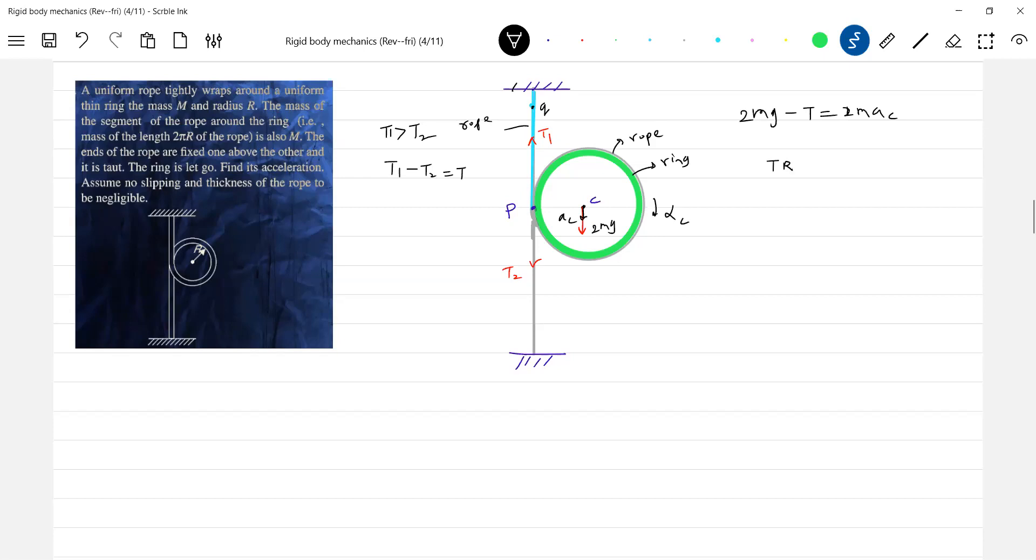Then T into R should be equal to IC into alpha C. What is IC? IC should be equal to 2 times MR squared.